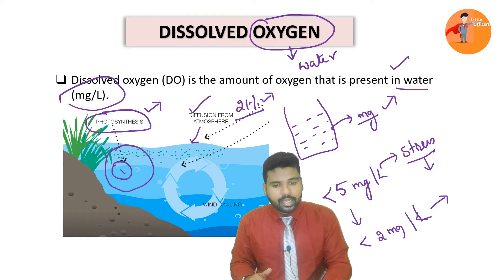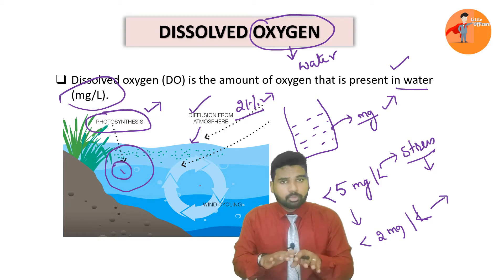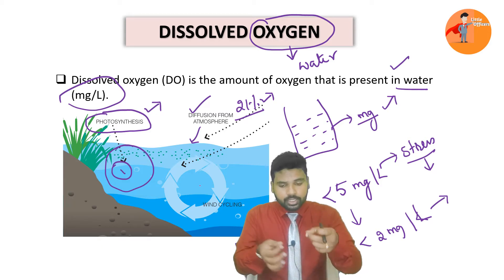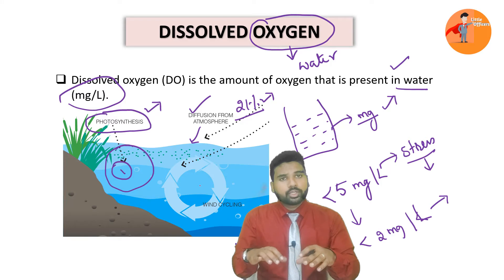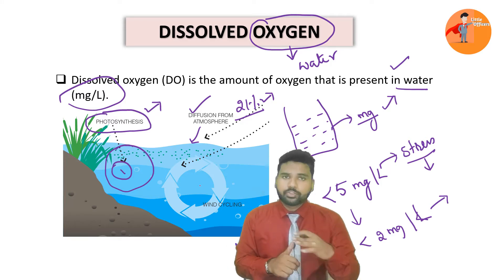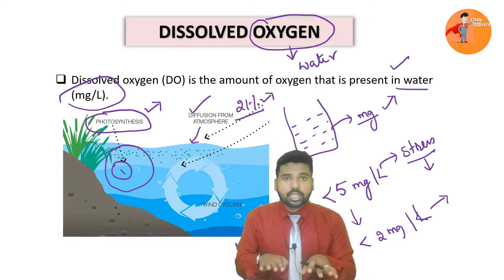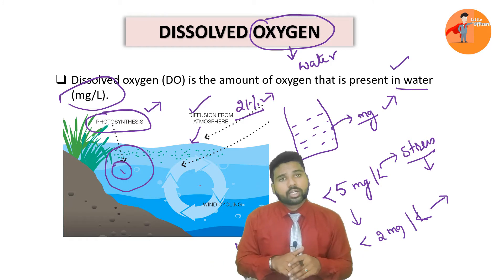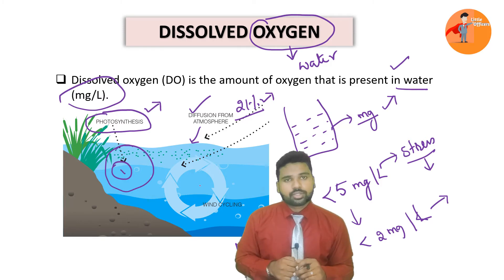I can give one example. All of you might have come across the word 'winter kill.' This happens when a water body is completely covered with snow and the interaction of oxygen with the atmosphere or photosynthesis reduces. As a result, the amount of dissolved oxygen in that water body reduces and finally it leads to death of the aquatic organisms. It is generally called winter kill because it happens during winters — the top portion of the entire lake or water body gets frozen and it reduces the dissolved oxygen content.